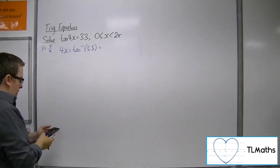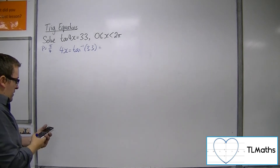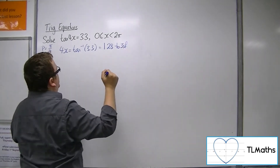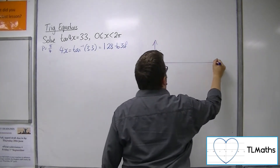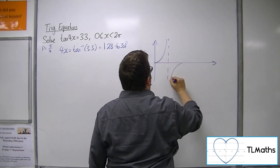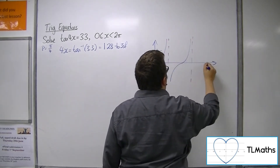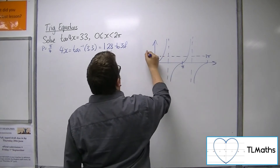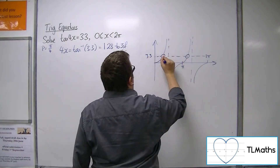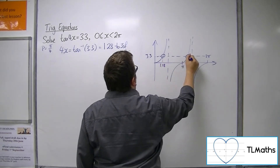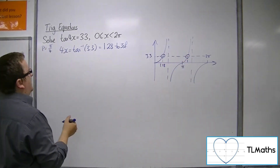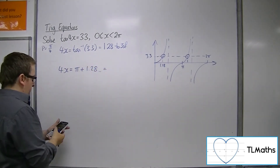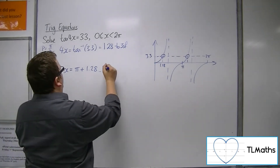If I inverse tan both sides, inverse tan of 3.3 is 1.28 to 3 significant figures. If I draw a sketch of tan between 0 and 2 pi, there's my 3.3. I'm looking at two solutions: 1.28, and the second one is found by adding on pi, giving 4.42.